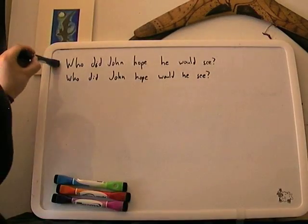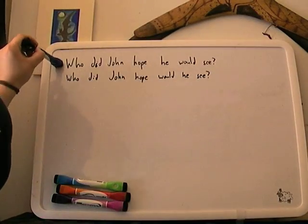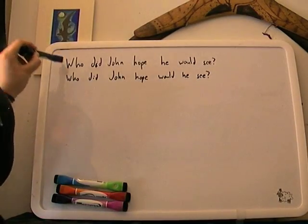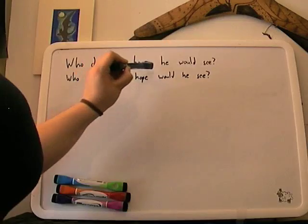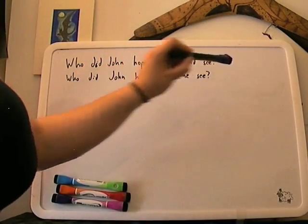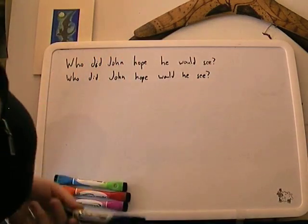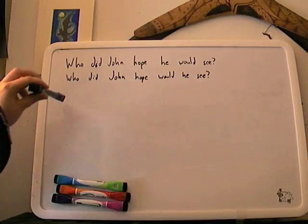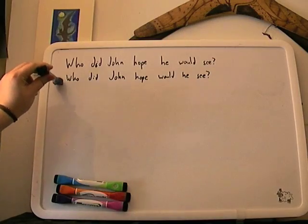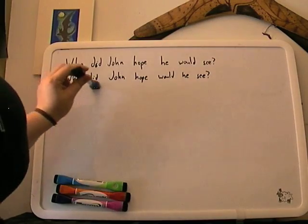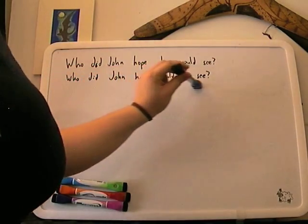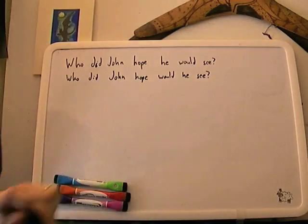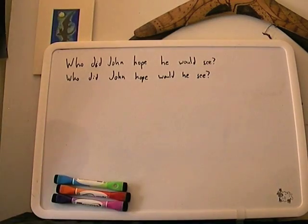Up here I've written the standard English version of the question, which is: 'Who did John hope he would see?' That's the sentence you probably say when you're speaking. And then we have: 'Who did John hope would he see?' — which is what they would say in the Belfast dialect.